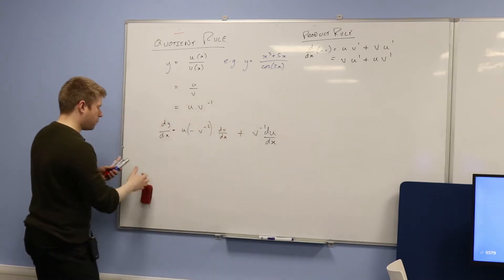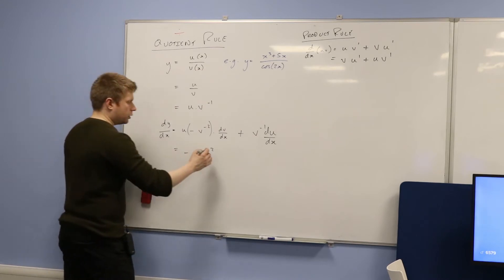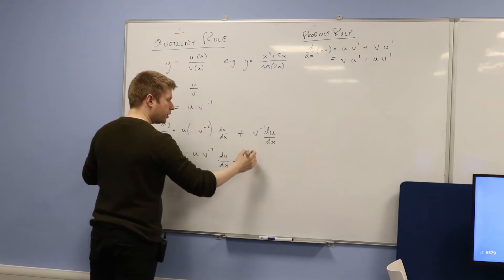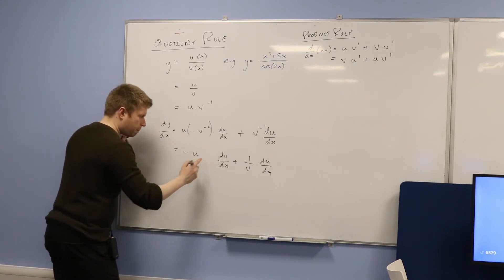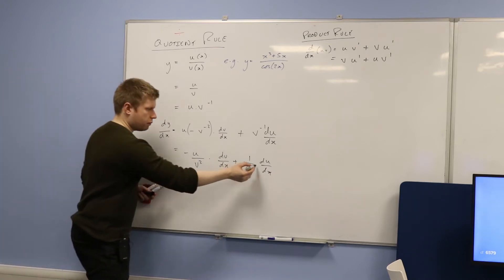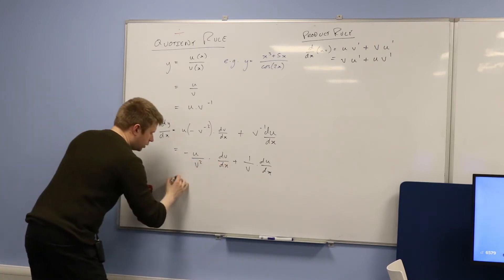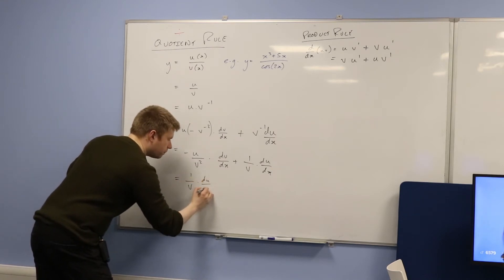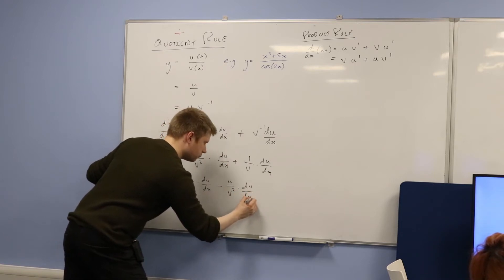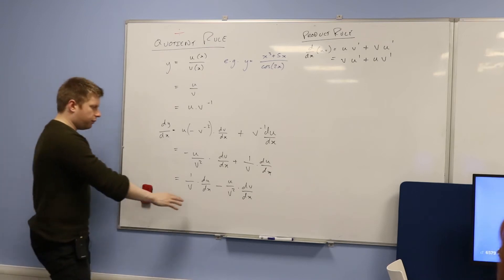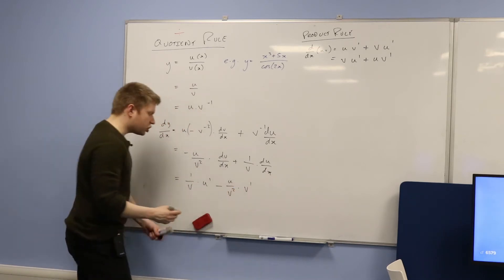So let's just tidy this thing up a little bit. I'm going to get a negative u, v to the negative two, times by the derivative of v with respect to x. Plus — well, this would be one over v — du by dx. In fact, I could change this to one over v squared, which I'm going to do. Now, just because I don't like writing the negative first when I've got a positive over here, I'm going to swap the order around. So, I'm going to get one over v multiplied by the derivative of u, minus u over v squared multiplied by the derivative of v. I'm going to swap du by dx for u dash and dv by dx for v dash, just to show it's the product.